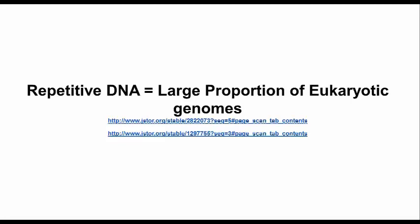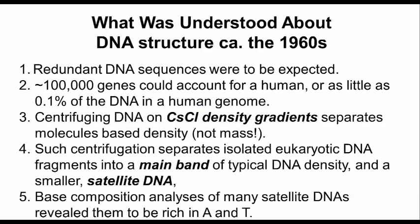Britton and Davidson's results basically showed that typical eukaryotic genomes turn out to be rich in redundant sequences. Cesium chloride density gradient centrifugation separates eukaryotic DNA fragments into a main band of typical DNA density and a smaller satellite band of greater or lesser density depending on species. In many cases, the satellite DNA was shown by base composition analysis to contain a higher proportion of adenine and thymine compared to the main band DNA, while for a few species the satellite DNA was richer in guanine and cytosine. There was already the expectation that some DNA sequences were, by their nature, redundant.